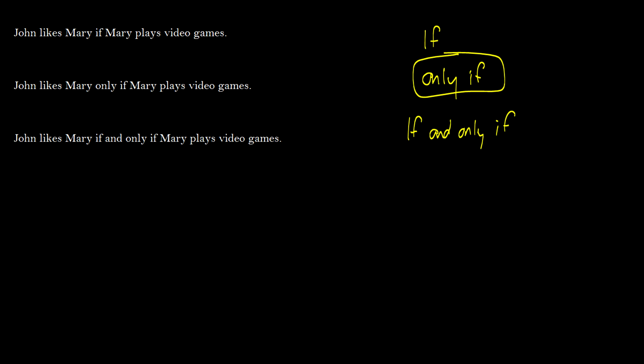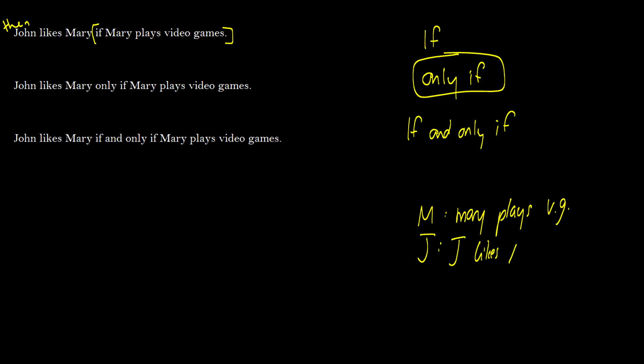There's always been something confusing about IF vs. IF AND ONLY IF, so I want to discuss it. Consider: 'John likes Mary IF Mary plays video games.' We can rewrite this as 'If Mary plays video games then John likes Mary.' So we write M → J, where M is 'Mary plays video games' and J is 'John likes Mary.' You have to paraphrase it, putting the IF clause first and the THEN clause after.